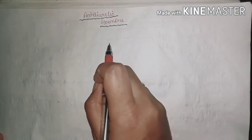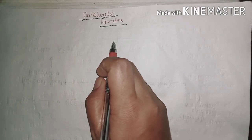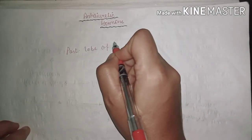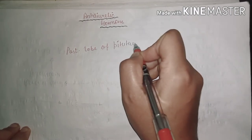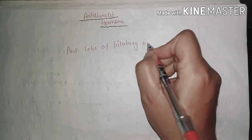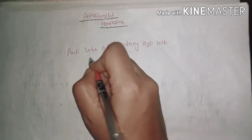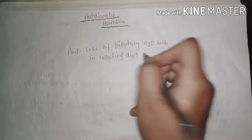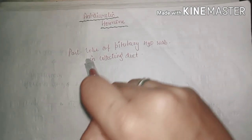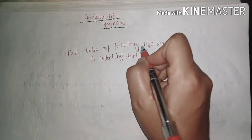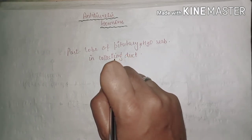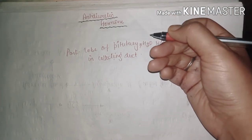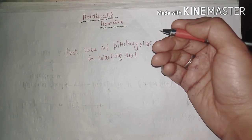The last hormone is anti-diuretic hormone, ADH. It is released from the posterior pituitary gland and plays a role in water reabsorption in the collecting duct of the kidney. This hormone is released when we don't have sufficient water — for example, when we have perspired a lot.